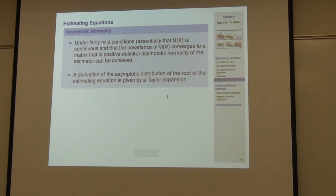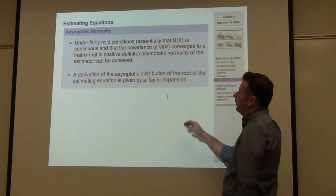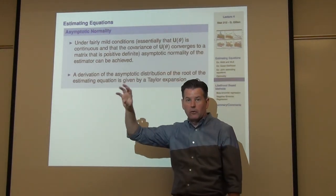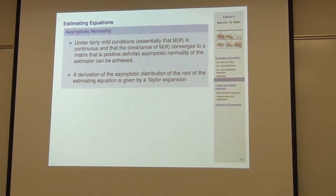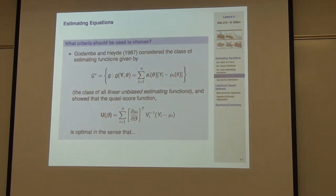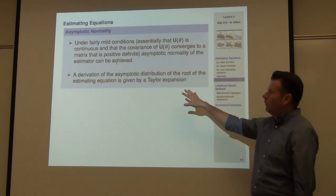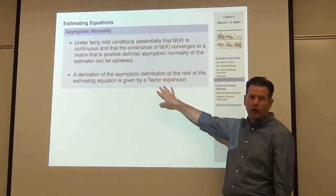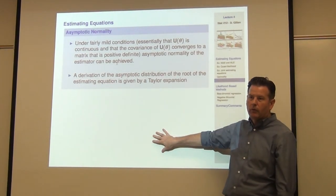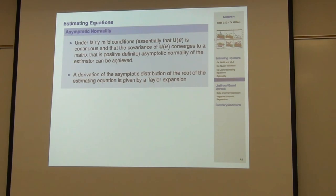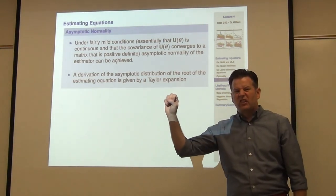The other nice thing about this is we've already actually derived it. So under fairly mild conditions, essentially you need that U of θ is continuous, the covariance of U of θ converges to a matrix that's positive definite. That's really one of those regularity conditions that we've talked about in the past. Then you can get asymptotic normality of the resulting estimator. So U of θ and the resulting estimator that comes from that class of estimating functions. How do you do that? Well, we actually sketched it out. If you go back to lecture three, when I derived the Huber-White result, that was exactly what I was doing. It was that first order Taylor expansion showing things going off to infinity, that θ hat will in fact go off to a normal distribution.